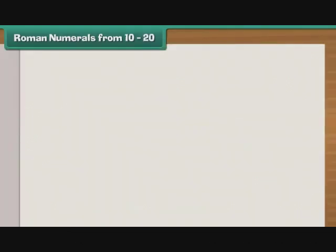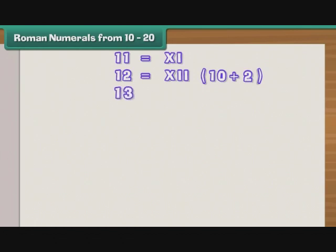Roman numerals from 10 to 20. 11 is 10 plus 1, so number 11 is written as XI, meaning 10 plus 1. Number 12 is written as XII, meaning 10 plus 2. Similarly, 13 is written as XIII.